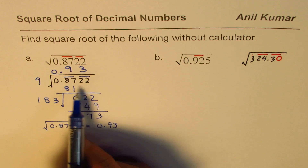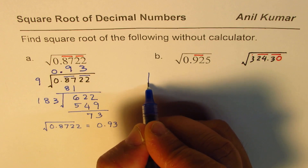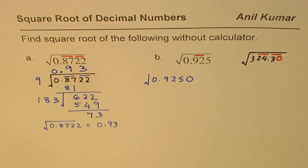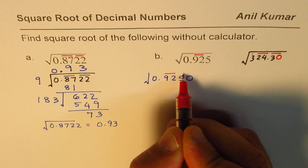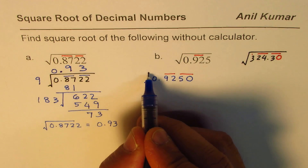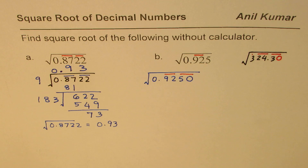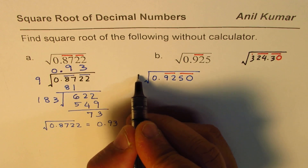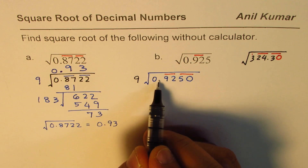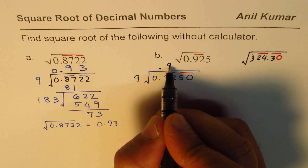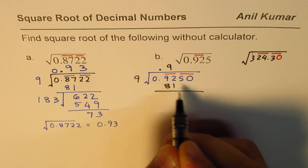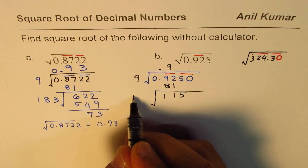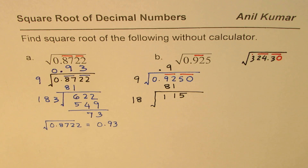The same method is applied again. This time we have three numbers after the decimal, so we write the number as 0.9255 with a zero added. Grouping in sets of two moving away from the decimal gives us the groups. What number goes into 92? Nine times nine is 81. Since we've taken a set after the decimal we place a decimal in the quotient, then 9. Nine times nine is 81, the difference is 11, and we bring down 55.